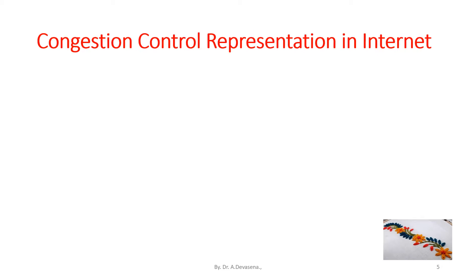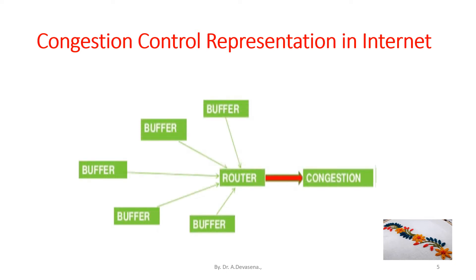Congestion control representation in the internet is shown below. Here the buffer indicates the packets that reach the router. If too many packets are reaching the router at the same time, congestion may occur due to that. This is indicated here.